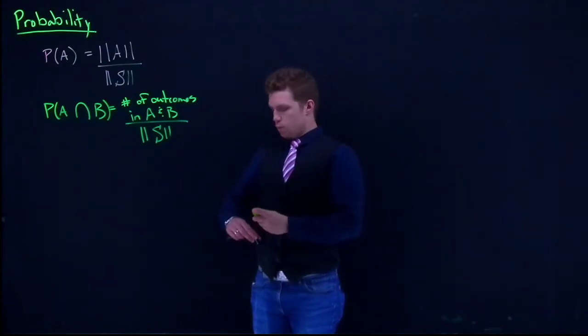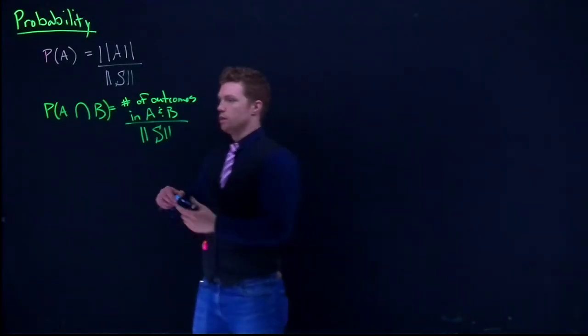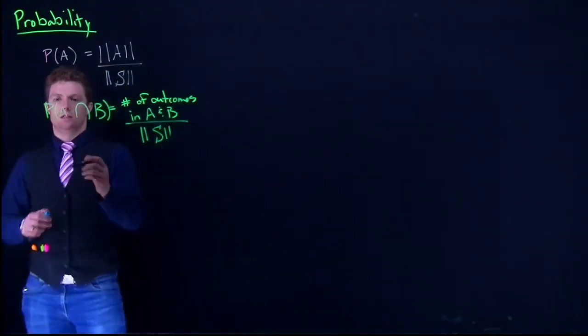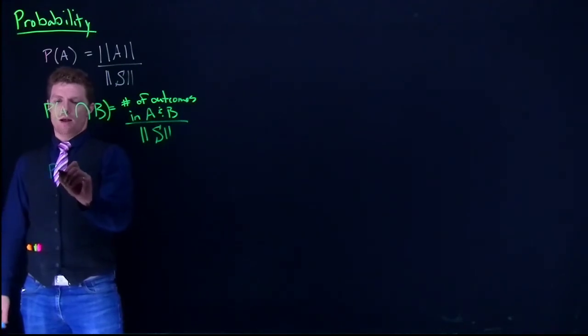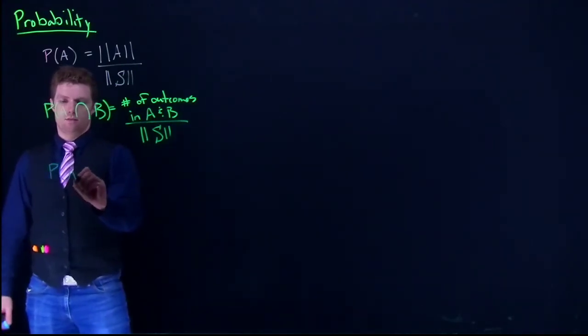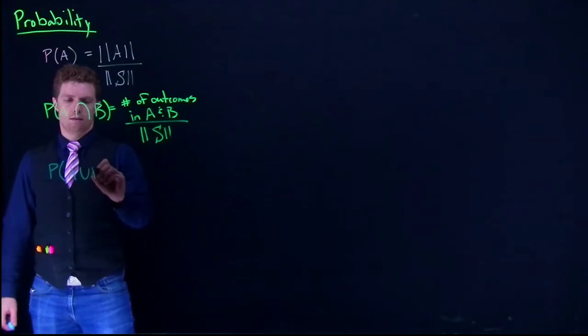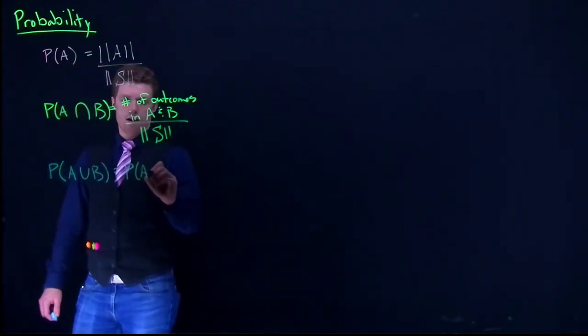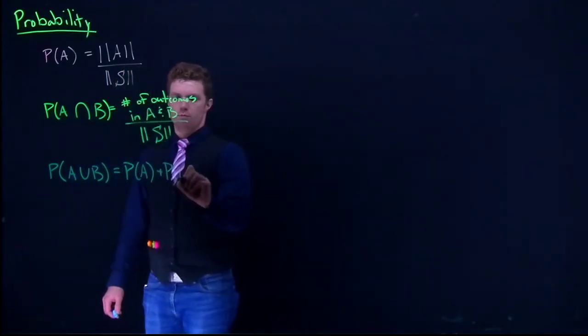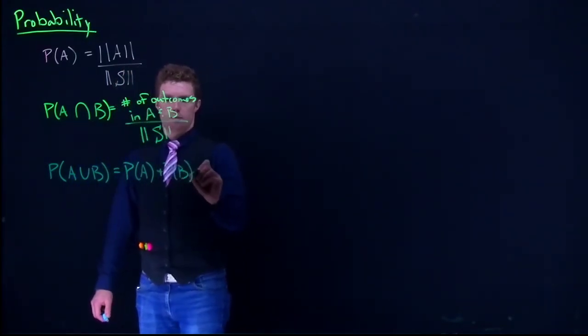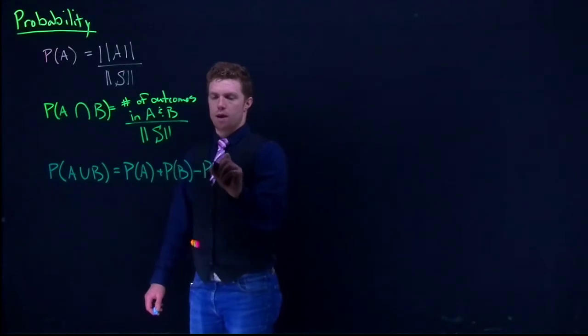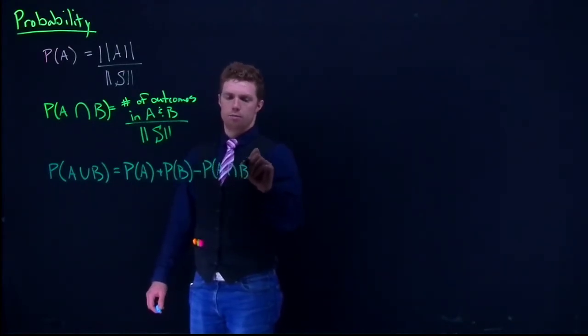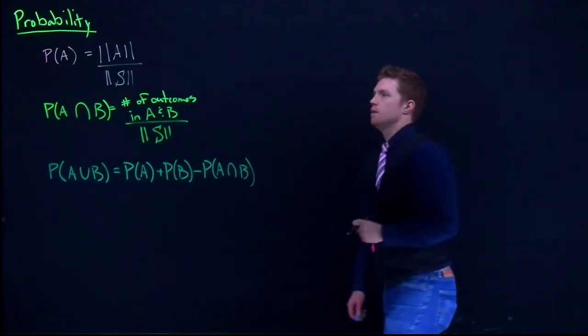So we could do number of outcomes in A and B divided by the total number of outcomes in our sample space. And then we also covered the union, which is the probability of A union B was equal to probability of A plus the probability of B minus the probability of A intersect B.